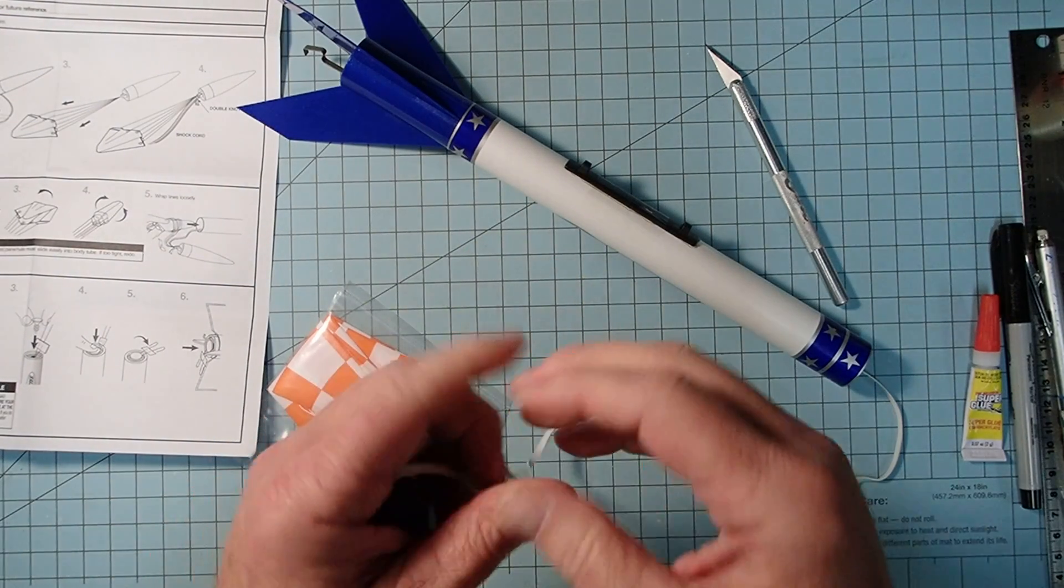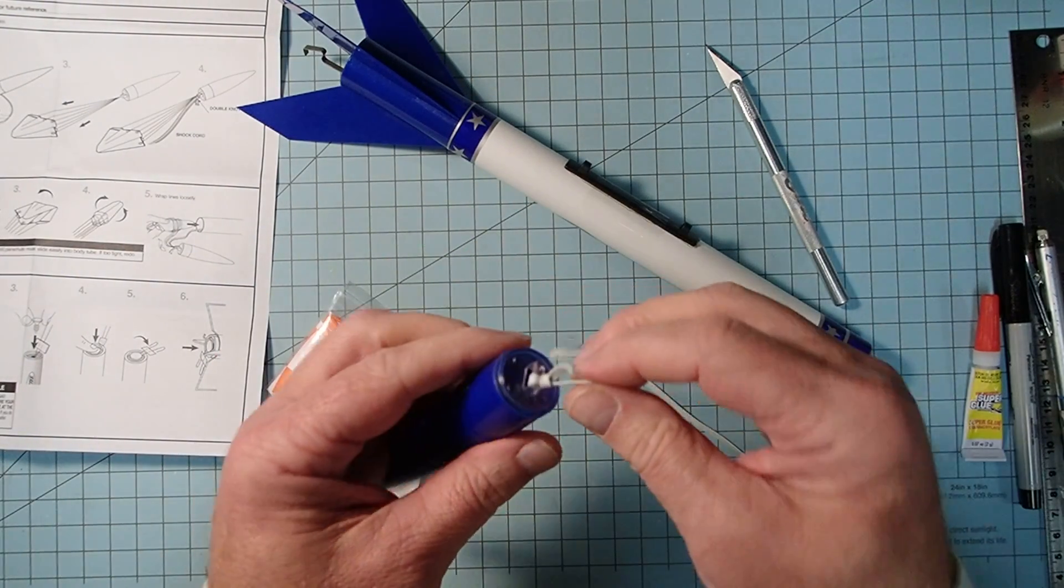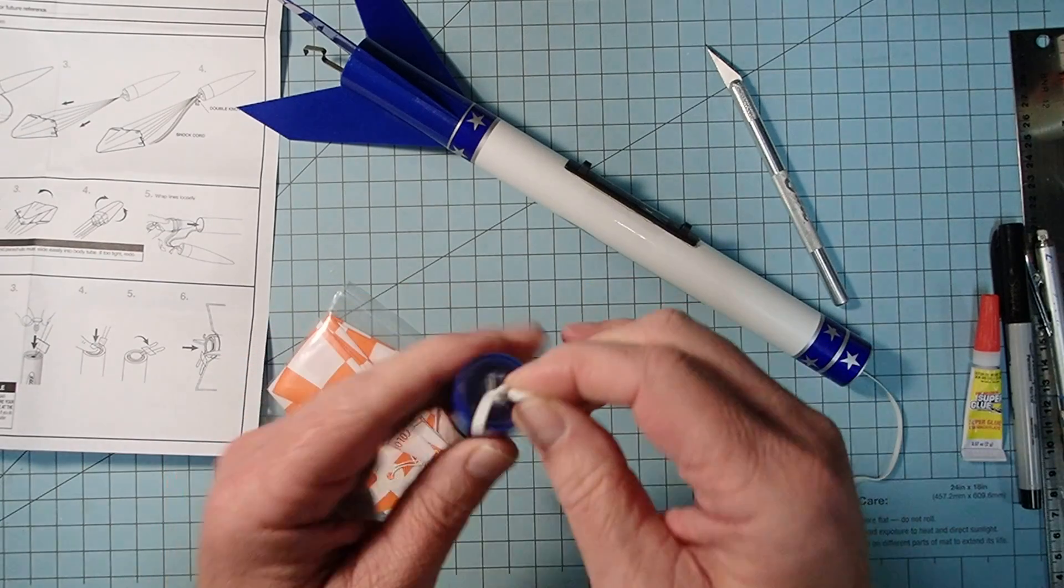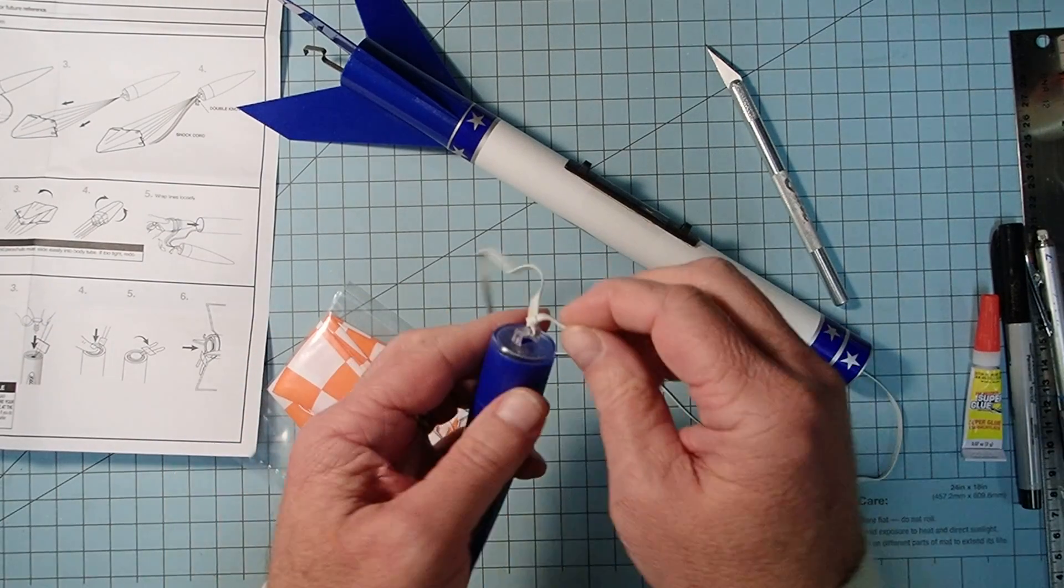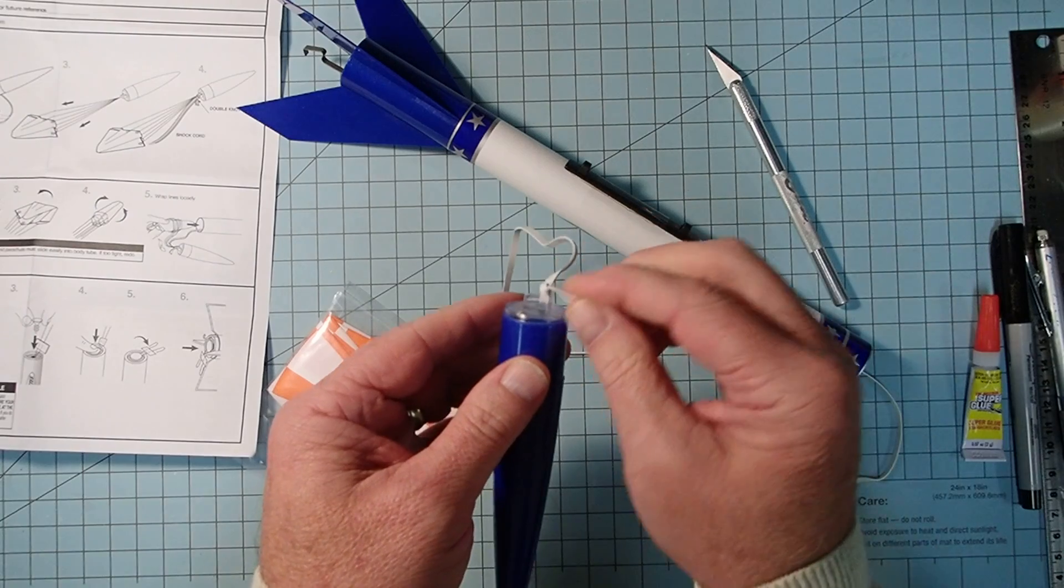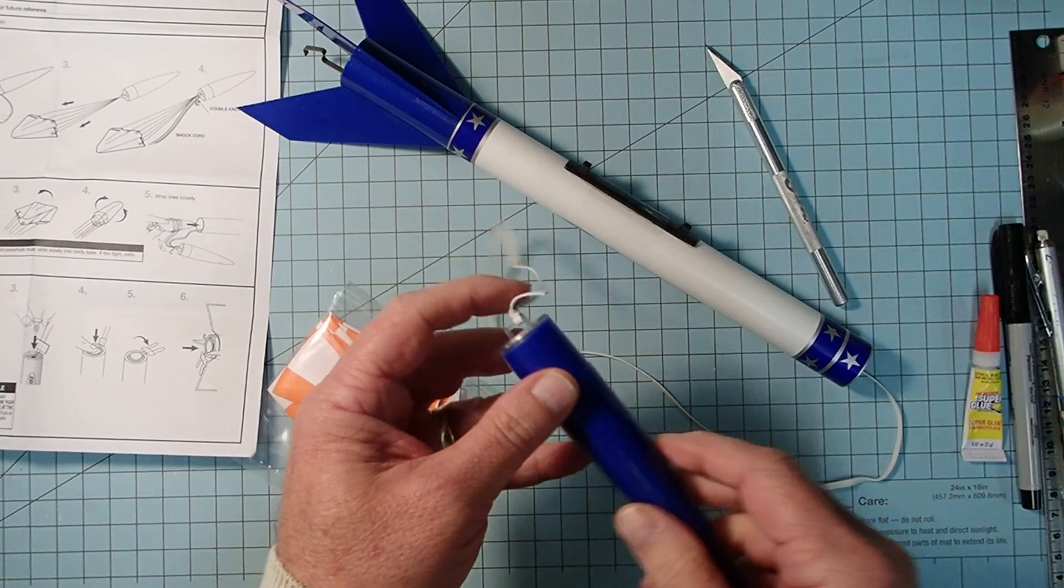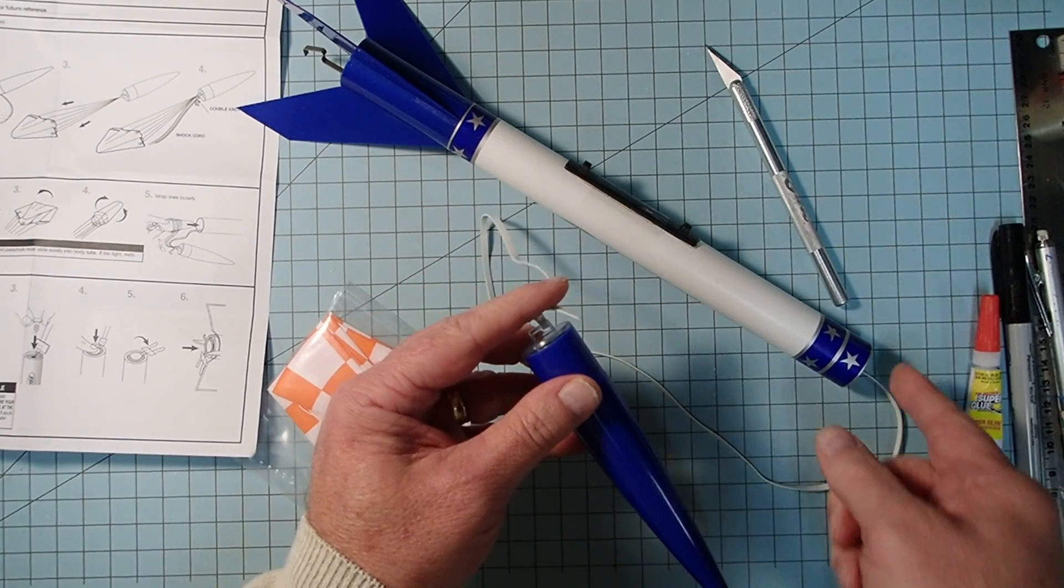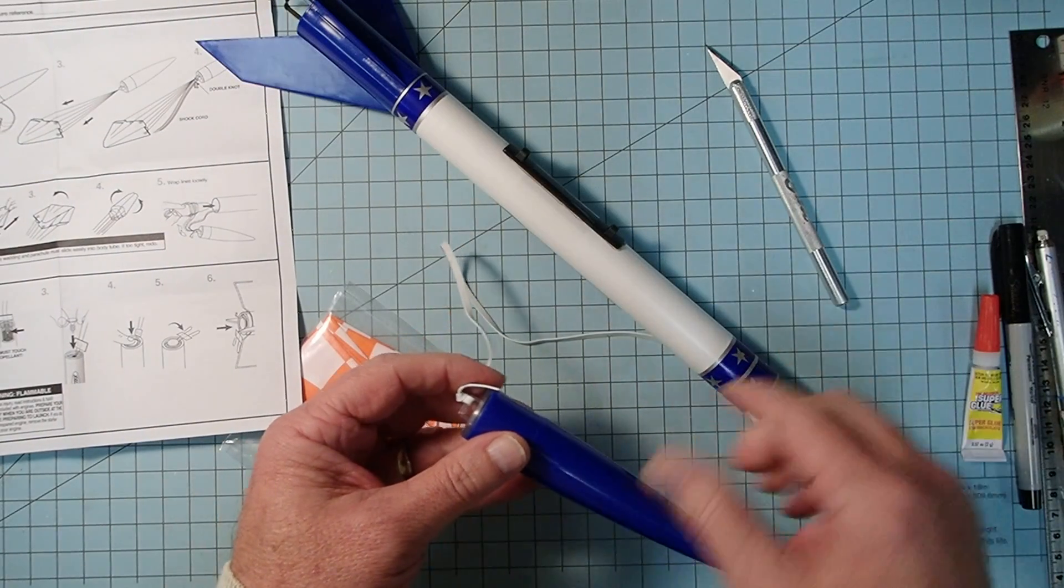Okay, but a few things to check before you even put the parachute on is, first of all, check the shock cord here. And this has a problem in that it's too long on the free end here.